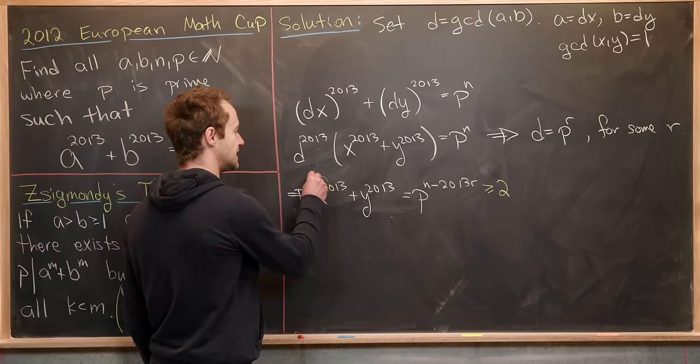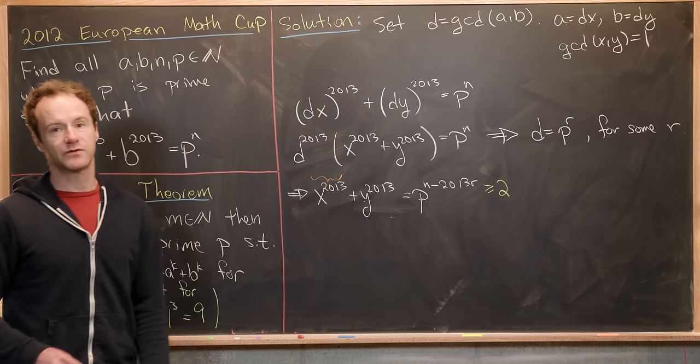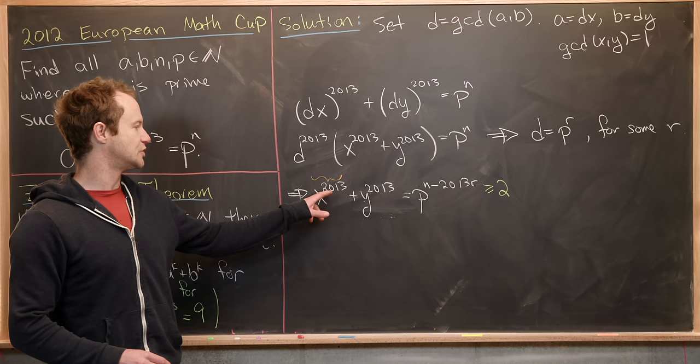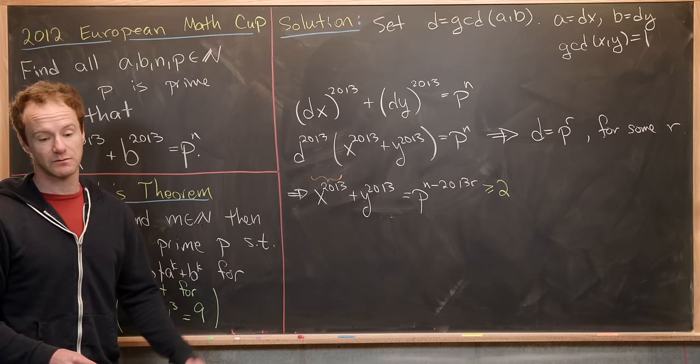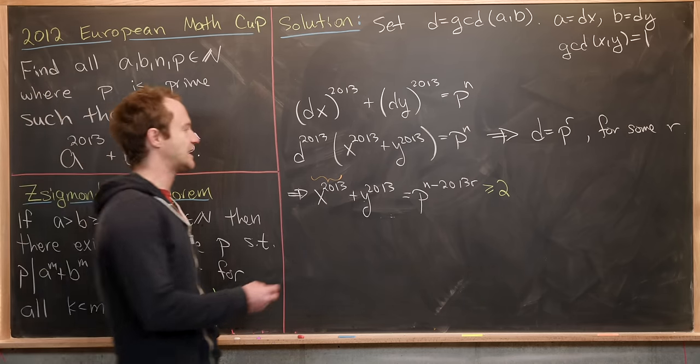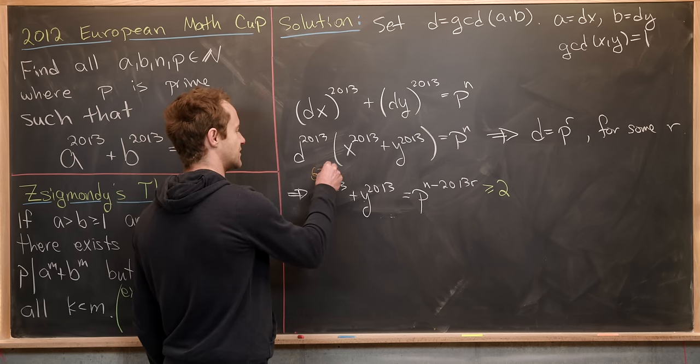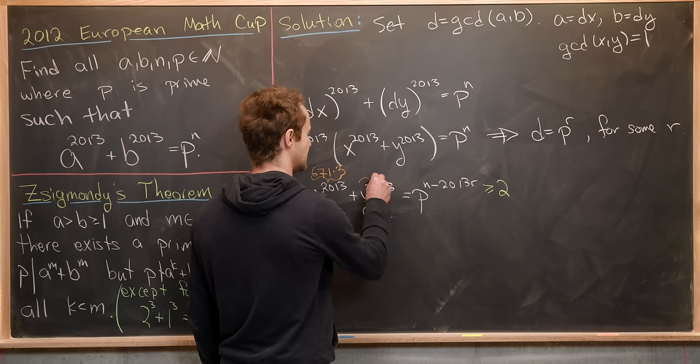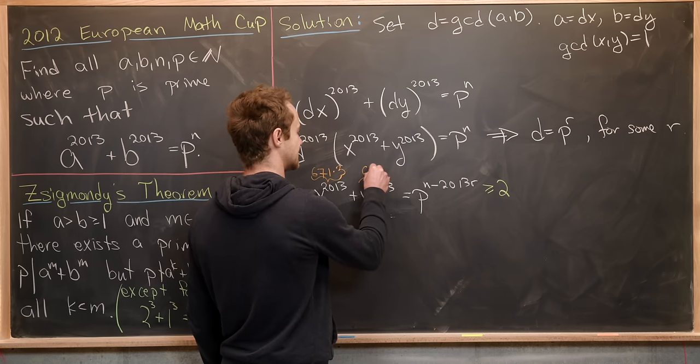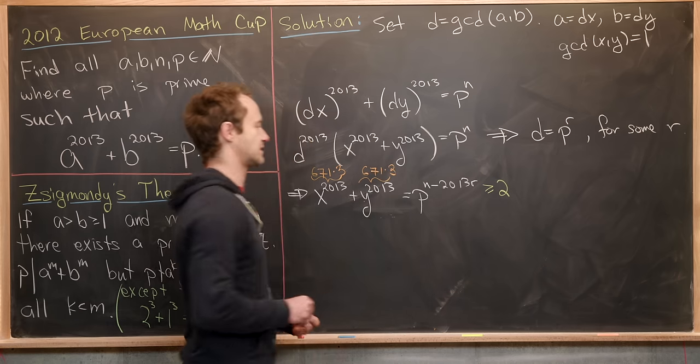So I'm going to notice that 2013, well that's a multiple of 3. We can easily see that because 2 plus 0 plus 1 plus 3 is equal to 6, which is a multiple of 3. And in fact we can write this as 671 times 3. Okay, so that makes, again, this thing right here is also 671 times 3.